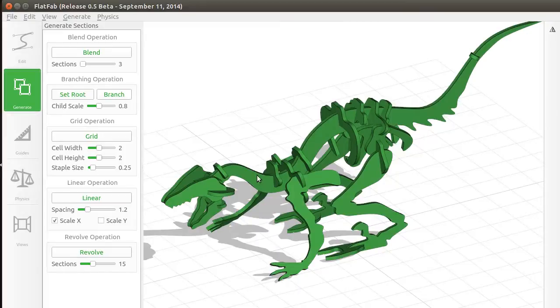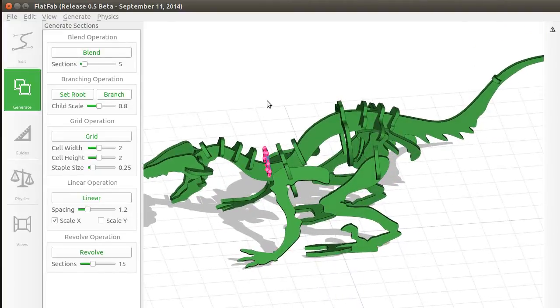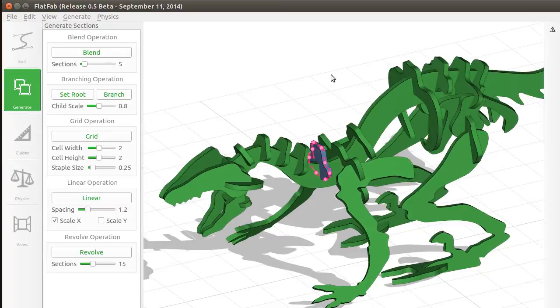The blend operation can be used to create intermediate duplicates that smoothly blend between two planar sections attached to a base planar section. In this case the base planar section is the spine of the dinosaur, and the sections to blend are the vertebrae and ribs that are found along it.